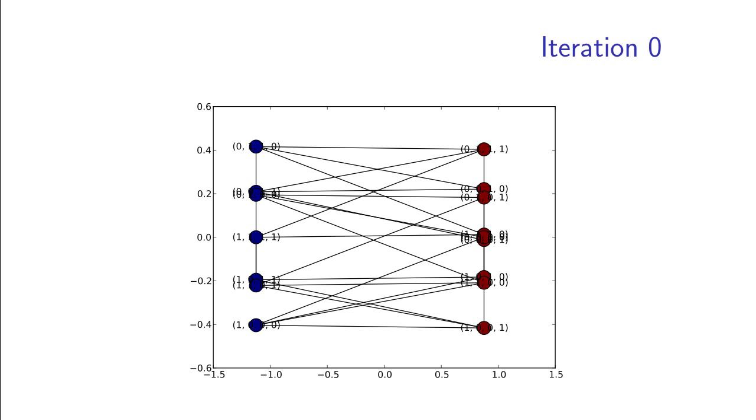Now here is the same algorithm applied to the hypercube, to a hypercube that has 16 vertices, so dimension 4. At the first step, every vertex is again assigned a random plus minus 1 label, and then the labels are slightly shifted so that they sum to 0.